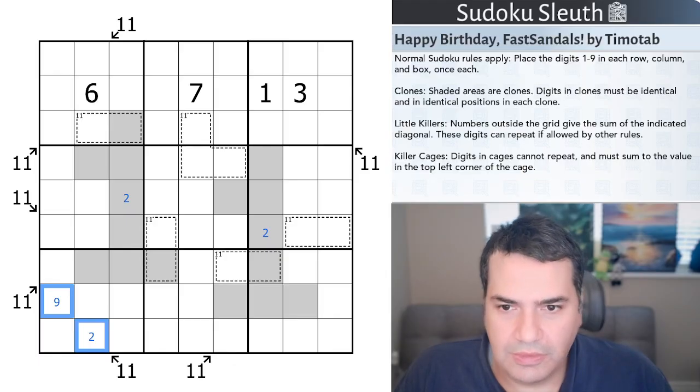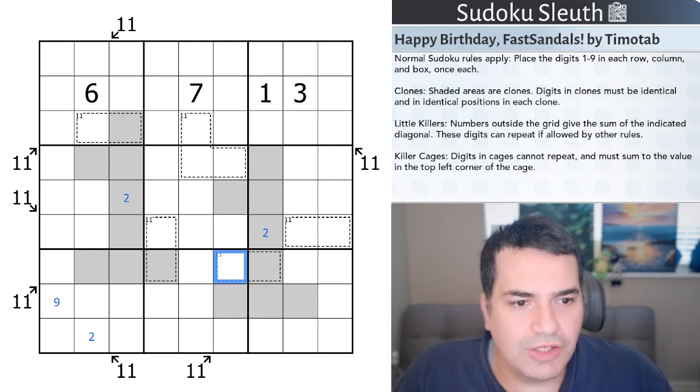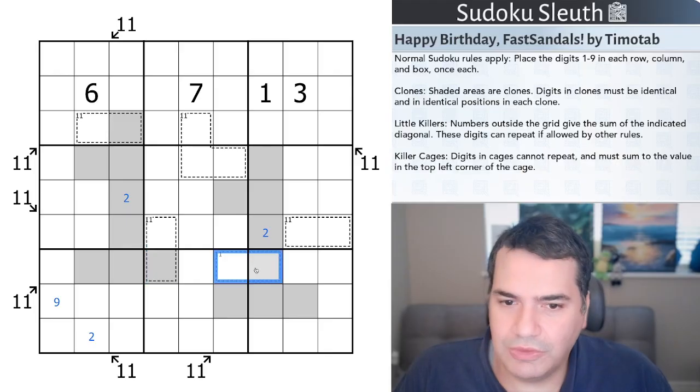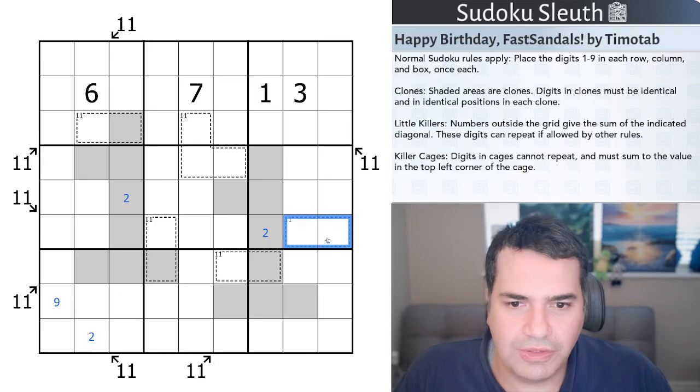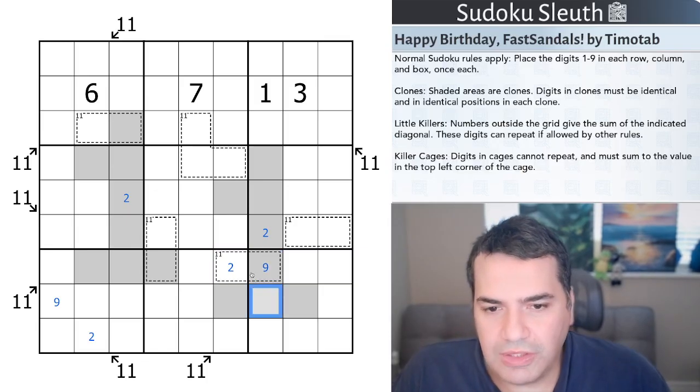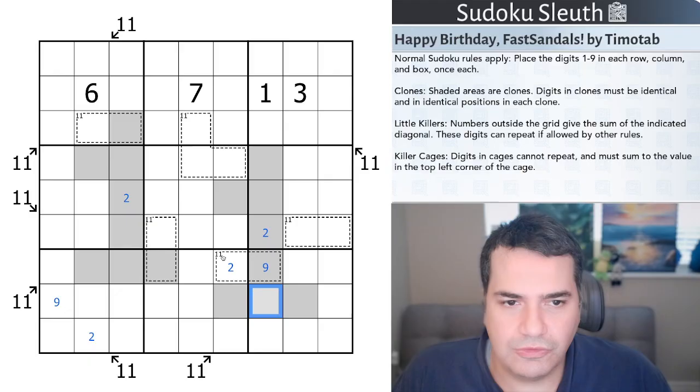We also have killer cages. So I can't use my 2 in this one. I can't use my 2. Oh hang on, I can here. Digits in cages cannot repeat and must sum up to the value in the top left corner of the cage. Now once again, all the cages are adding up to 11. You can spot a bit of a theme going on here. Maybe Fast Sandals is turning 11, not 111. And if this cell here is a 2, this would have to be a 9 again to make sure that these two cells inside this two-cell cage must sum up to 11, which is the sum that's given in the top left corner.